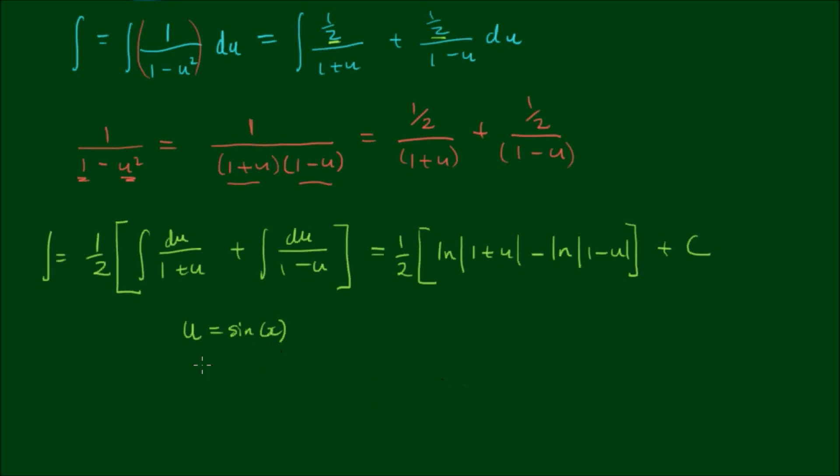So a few steps back, we let u equals sin x. So if we substitute this back in, we get the answer is 1 half of the log of 1 plus sin x. So 1 half is out the front, minus log of 1 minus sin x.